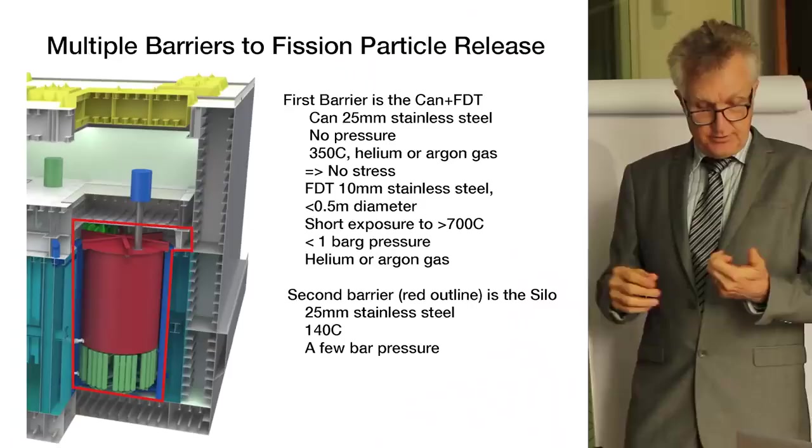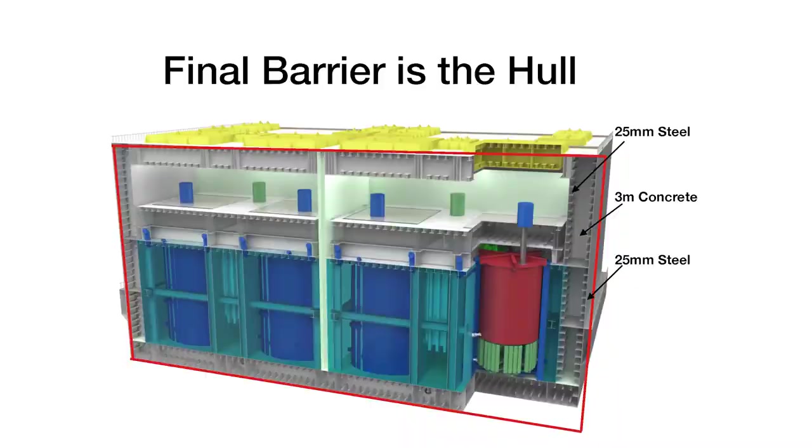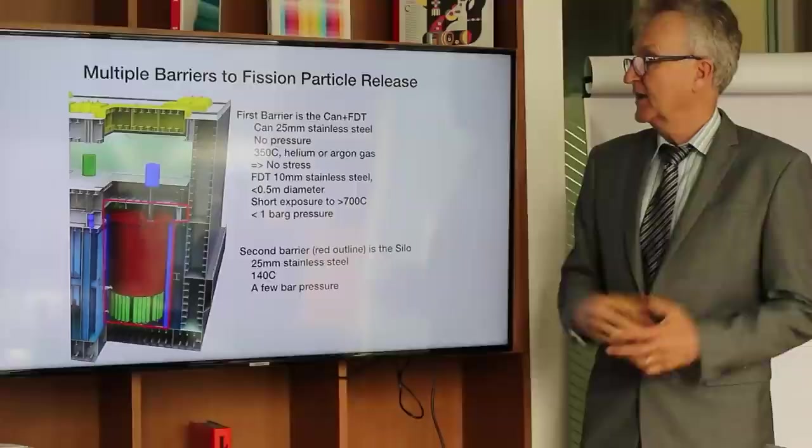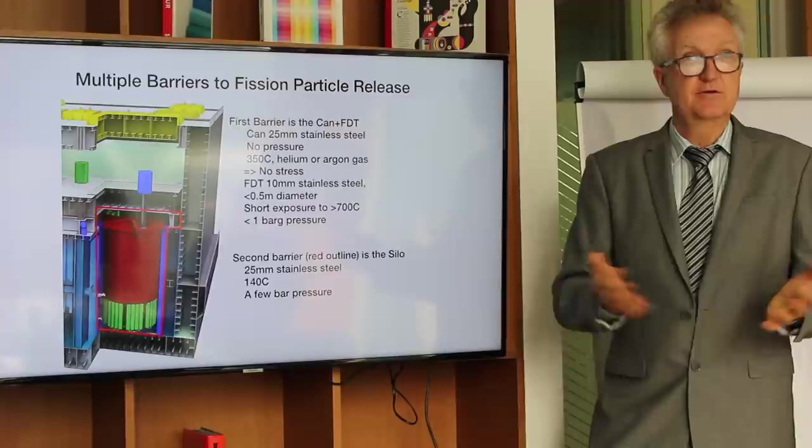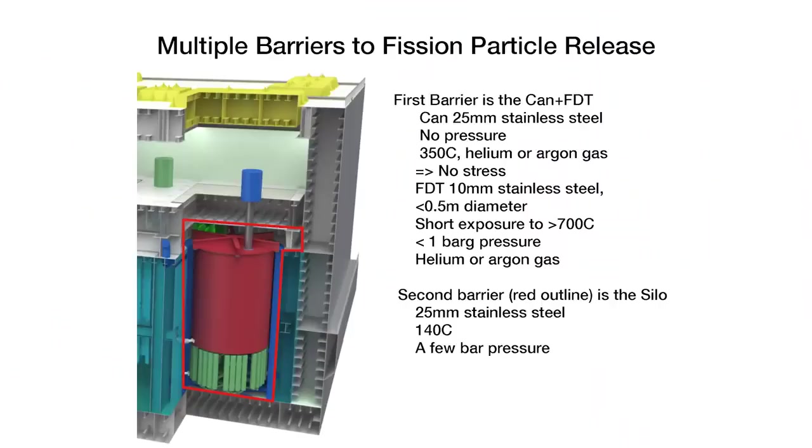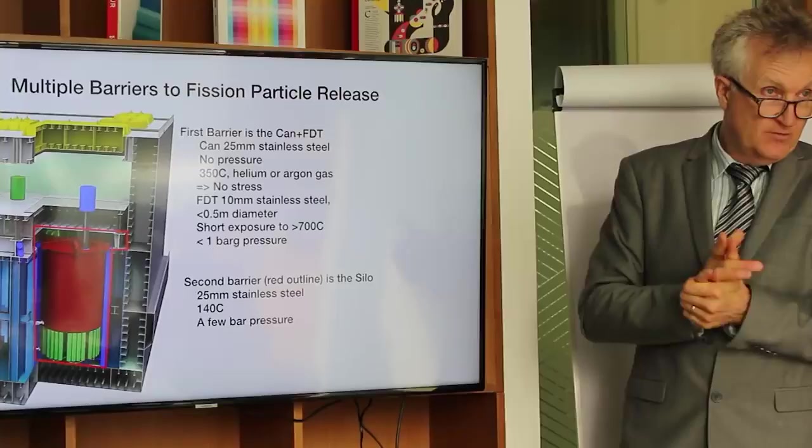The fission products are mostly inside the primary loop, but definitely inside the can, which is inside the silo, inside the hull. The can is 25 millimeters of steel, but it has no pressure. It's the same pressure on the outside as inside. And it doesn't have corrosive gases. It's got helium or argon around it. So it's in a very benign environment. The drain tanks are thinner. They're about 10 millimeters thick, but again, the same thing. And they're small diameters. So their hoop stress is small. The can is at about 350 C. So it's not even very warm. The drain tank does get warm when the salt is put into it, but that doesn't last for a long time. So the cumulative creep damage is small.